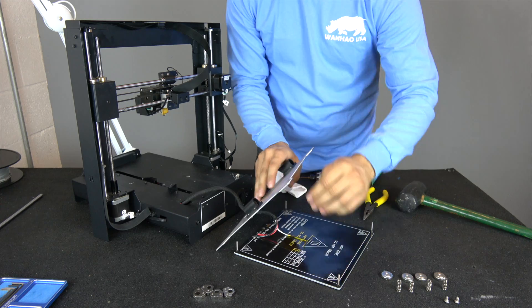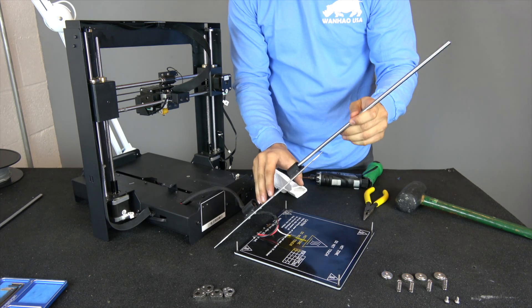Once you're finished, slide your guide rails back through the bearings and place the bed plate onto your printer like so.